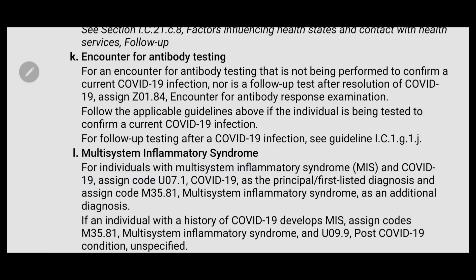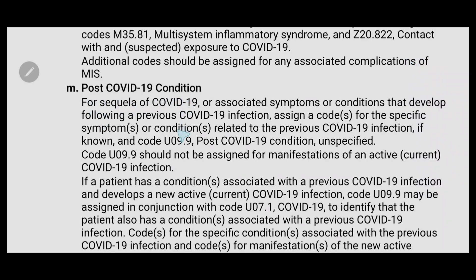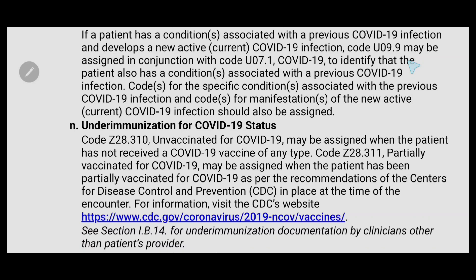For multi-system inflammatory syndrome in individuals with COVID-19, the first code should be COVID-19 (U07.1) and the second code should be multi-system inflammatory syndrome. For post-COVID-19 condition — sequelae or associated symptoms or conditions that develop following a previous COVID-19 infection — assign a code for the specific symptom or condition related to the previous COVID-19 infection if known, and code U09.9 (post-COVID-19 condition, unspecified). For under-immunization status, use Z28.310 for unvaccinated for COVID-19, and Z28.311 if the patient is partially vaccinated.